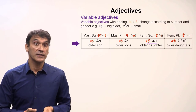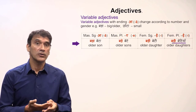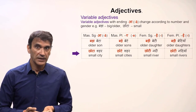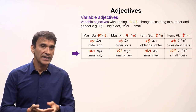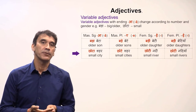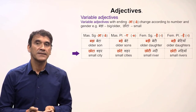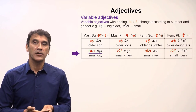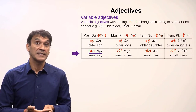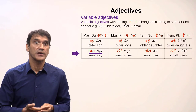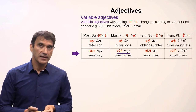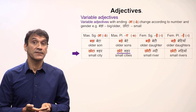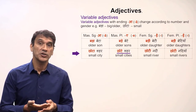Similarly, 'chota' is the masculine singular form, 'chote' is masculine plural, and 'choti' is feminine singular and plural. Let's take the adjective 'chota' (small) with nouns: 'chota shahar' (small city) — 'shahar' is a city and it's masculine, that's why it is 'chota shahar.' 'Chote shahar' (small cities) — here 'shahar' is in plural, so the adjective is in plural: 'chote shahar.'